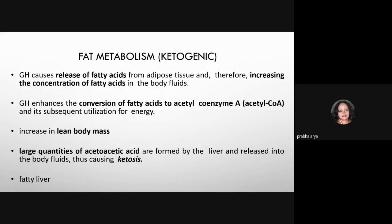Growth hormone has a ketogenic effect on fat metabolism. It causes release of fatty acids from adipose tissue, increasing their concentration in body fluids. GH enhances conversion of fatty acids to acetyl-CoA and its utilization for energy through the citric acid cycle, increasing lean body mass as fat stores are depleted and protein synthesis increases. However, excessive GH effect on fatty acids can cause increased acetoacetic acid formation leading to ketosis, and can also cause fatty liver with fat deposition in the liver.